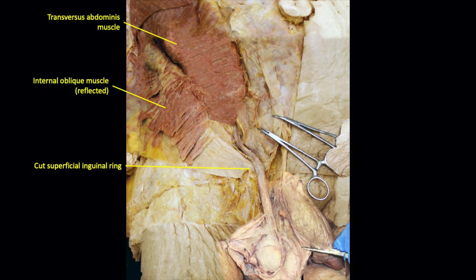Reflecting the internal oblique reveals the last muscle layer, the transversus abdominis. Often the internal oblique and transversus muscles are fused and separation is not possible. The transversus muscle also takes its origin from the inguinal ligament. Reflecting the internal oblique allows us to determine the path of the nerves innervating the anterior abdominal wall muscles — they travel between the transversus abdominis and the internal oblique, similar to intercostal nerves traveling between the innermost and intermediate layers of the thoracic wall.